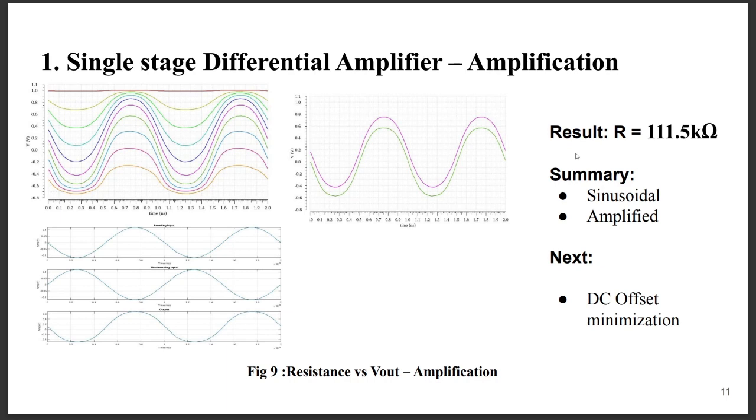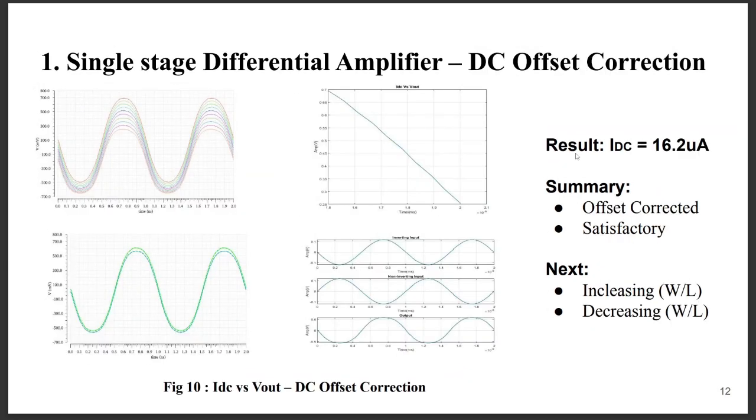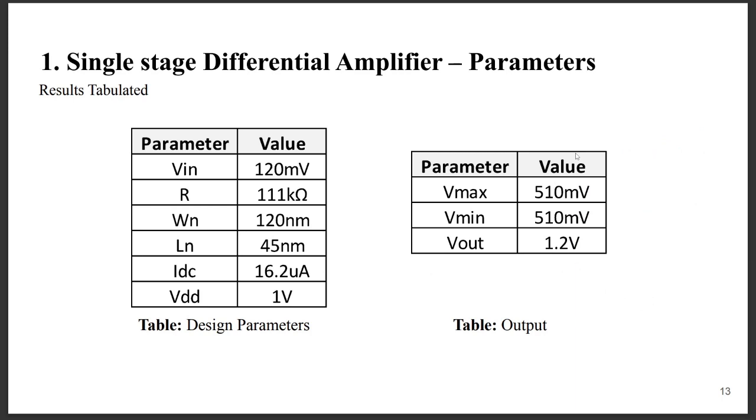The only thing remaining now was the DC offset minimization. For DC offset minimization, we found that the current source was mainly responsible. As a result, we decided to vary the value of the current source and then compare it with V out. At about 16.2 micro ampere, we almost corrected the entire DC offset. So these are the main design parameters for the single stage differential amplifier and this is the result that we have received.